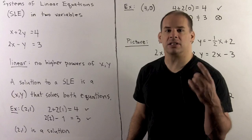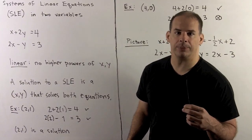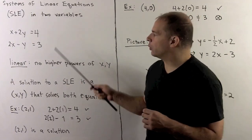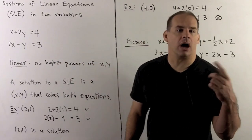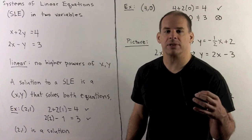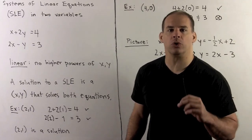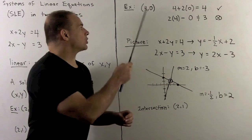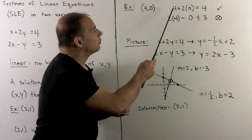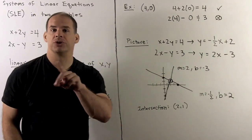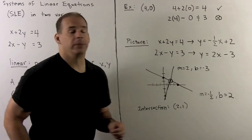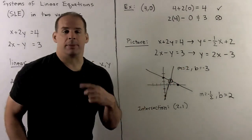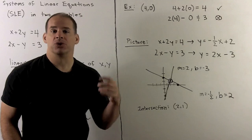We want to find solutions to systems of linear equations if they exist. We'll have two approaches: one will be computational, where we manipulate the equations, and the other will be pictorial, where we look at the graphs. Let's check other points. For (4, 0): 4 plus 2 times 0 is 4, so it's a solution to the first equation. But 2 times 4 minus 0 equals 8, which is not equal to 3, so it's not a solution to the second equation — and therefore not a solution to the system.